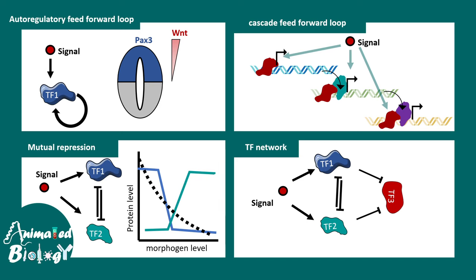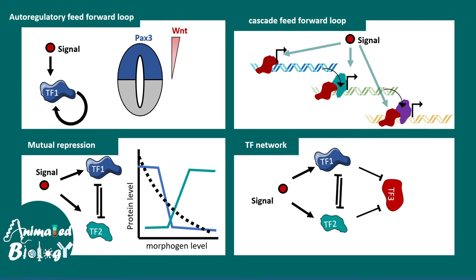There could also be complicated transcription factor networks — involving mutual repression, feed-forward activity, and feedback activity — all possible activities happening inside a complicated loop. These are really important for cell fate specification, development, and patterning.